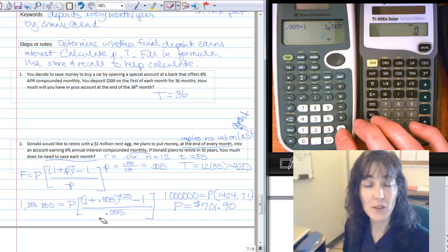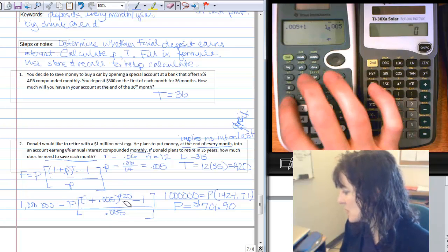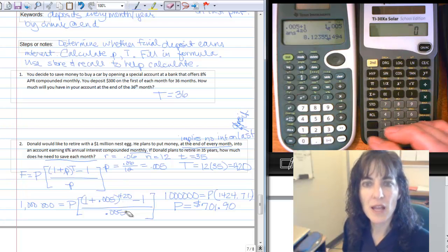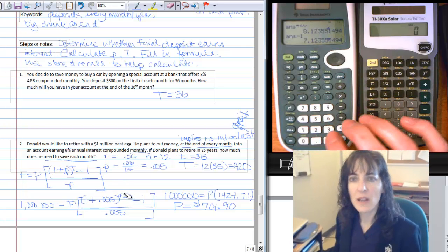And I get the 1.005, raise it to the 420th, so to the 420th, enter, and then subtract off that 1, minus 1, enter.